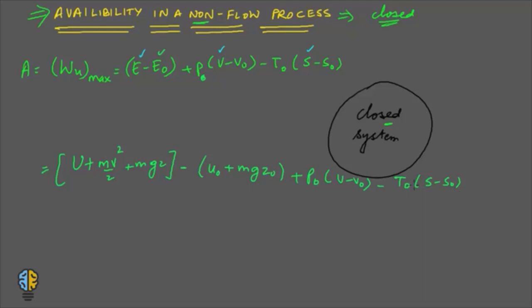Now if I neglect the potential energy and the kinetic energy changes and I take it for unit mass, these terms become zero. For unit mass the availability becomes small a, and this becomes the difference of small values of U plus small P naught into V minus V naught minus T naught into S minus S naught.